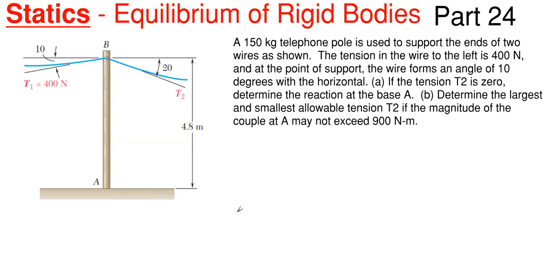First we have to identify our reactions. This is a telephone pole — the wires supply forces, not reactions. The only place a reaction exists is at the base at A, where the telephone pole is buried into the ground. With one support condition, that support is a fixed end condition, a cantilevered end condition, or a moment connection.